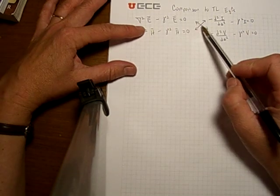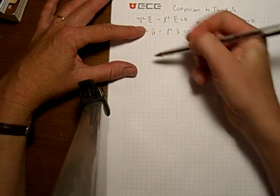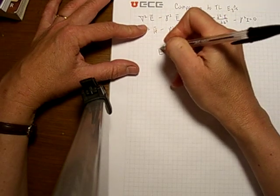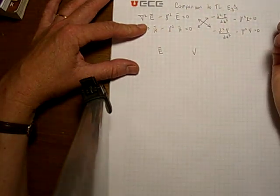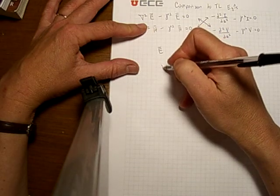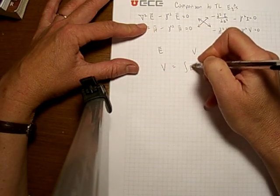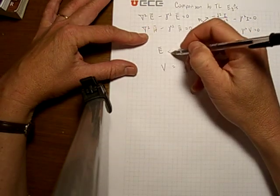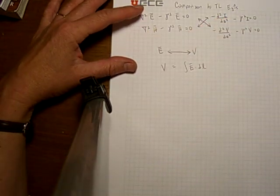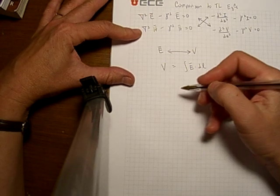Notice the similarity here. The electric field is also represented by the voltage. In fact, you know about this already. You know that the voltage is equal to the integral of E dot dl. So it's not surprising that we should have a similar equation for the electric field and the voltage.